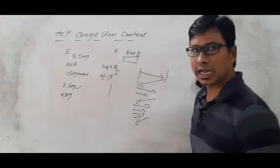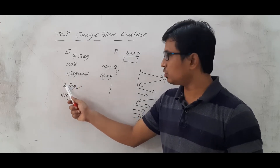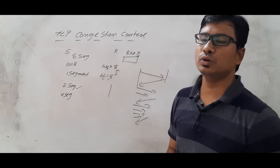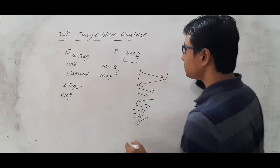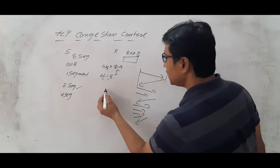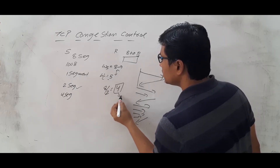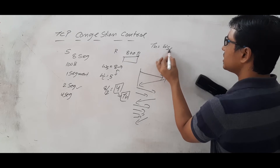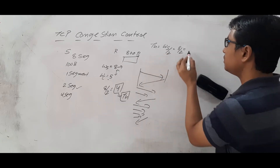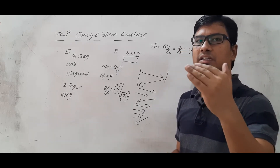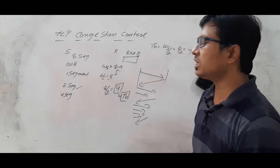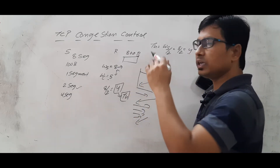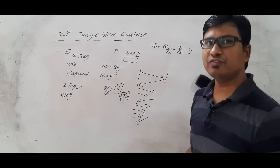You might ask: after 1, 2, 4 — shouldn't the next be 8? No, because the threshold value is: sender window size divided by 2, which is 8 / 2 = 4. So the threshold is 4. Up to the threshold, you increase the window size exponentially. That is why we call it the slow start phase — we start with 1 segment, then 2, then 4, up to the threshold.